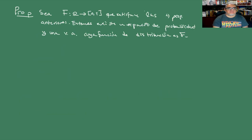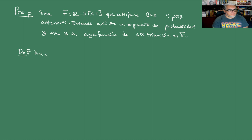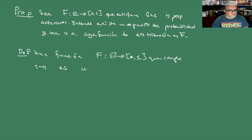Vamos a tener por el momento que creernos esta parte. Entonces, la definición de distribución ya no depende de una variable aleatoria: F de R a [0,1] que cumple las propiedades 1 a 4 es una función de distribución.